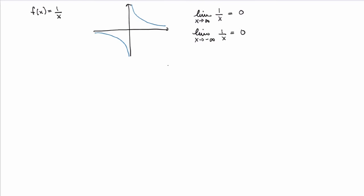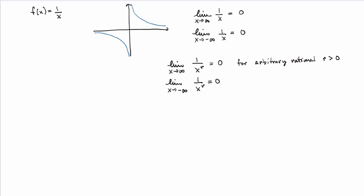It's easy to convince yourself that the limit as x goes to infinity of 1 over x to any positive power r is equal to 0, for arbitrary rational number r greater than 0. This is obvious because if x becomes very large, 1 over x will become very small, so it goes to 0, and you get the same result for negative infinity. But here you have to be careful: x to the r must be well defined. For example, if r was one-half, that would be the square root of x, and if x is negative, that would not be real. So you have to make sure everything is well defined.